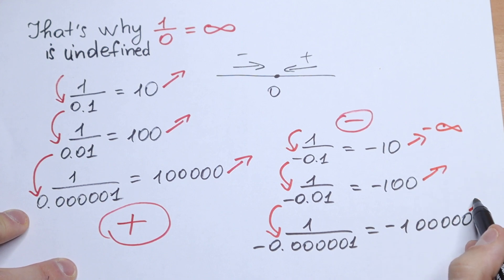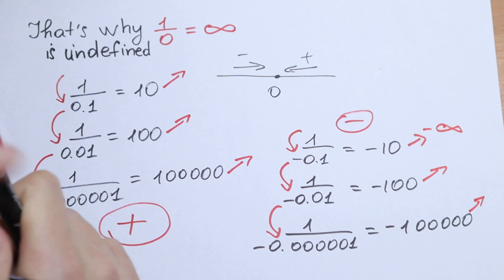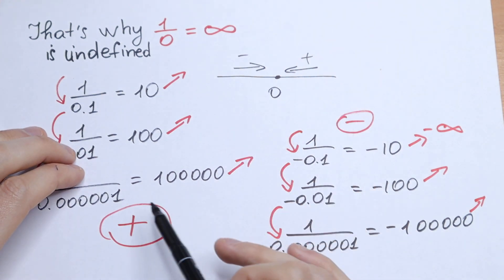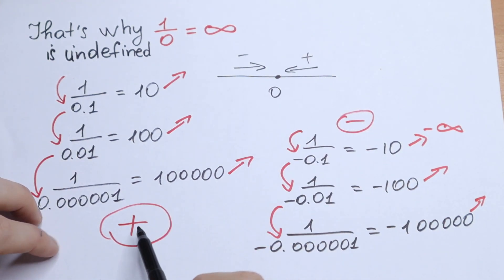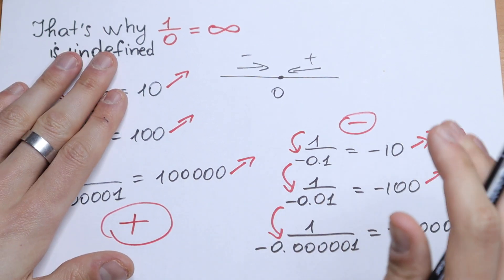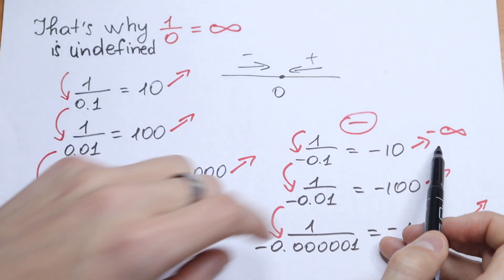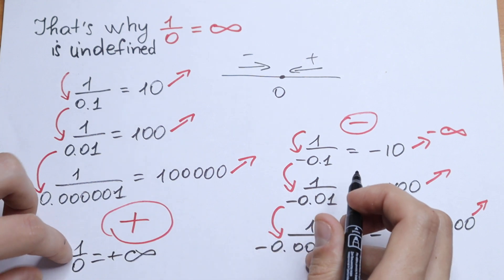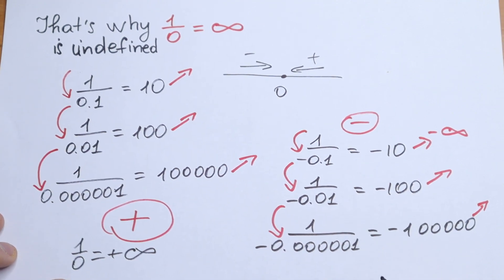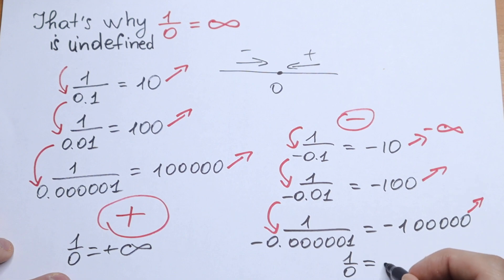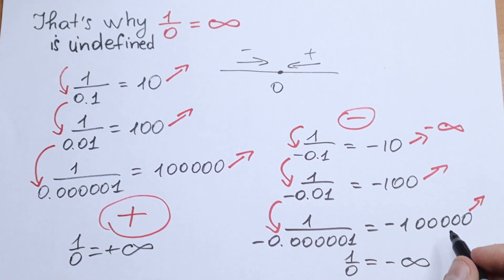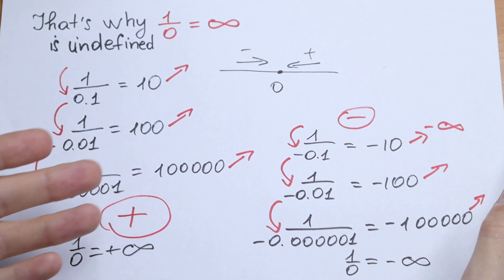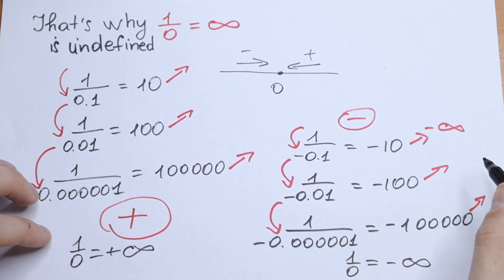Right here it grows to minus infinity. And this is the key question — we can get to 0 from two directions, minus and plus. As a result, we will have one answer from each side. From the negative side we have negative infinity, and from the positive side we have positive infinity. So 1 over 0 equals positive infinity when approaching through positive numbers, and negative infinity when approaching through negative numbers — two different answers.